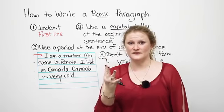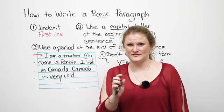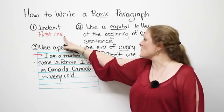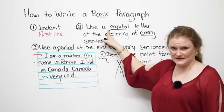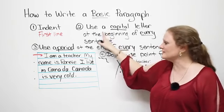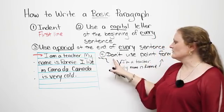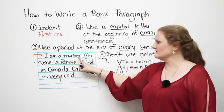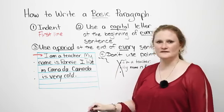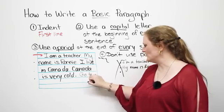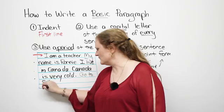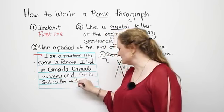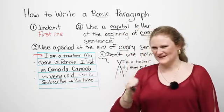So four basic things to remember when you're writing a basic English paragraph. The first one is indent the first line of your paragraph only. Use a capital letter at the beginning of each new sentence, and use a period at the end. Also, don't forget, don't use point form. 'I am a teacher. My name is Ronnie. I live in Canada. Canada is very cold.' Go to subscribe on YouTube so you can find more great lessons like this.